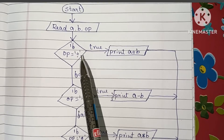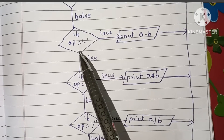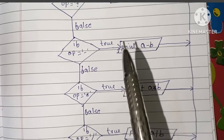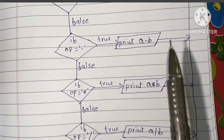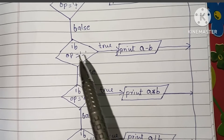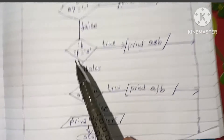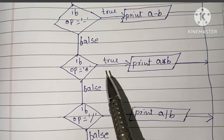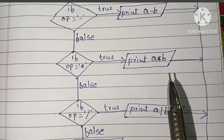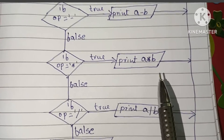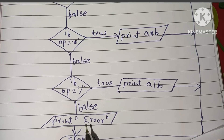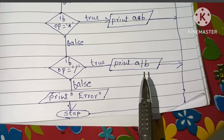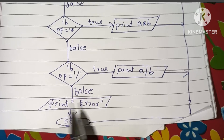If the plus condition is false, we check for minus. If op equals minus and is true, we print a minus b. If that is false, we check for multiplication using the asterisk symbol; if true, we print a into b. If false, we check for division; if true, we print a divided by b.